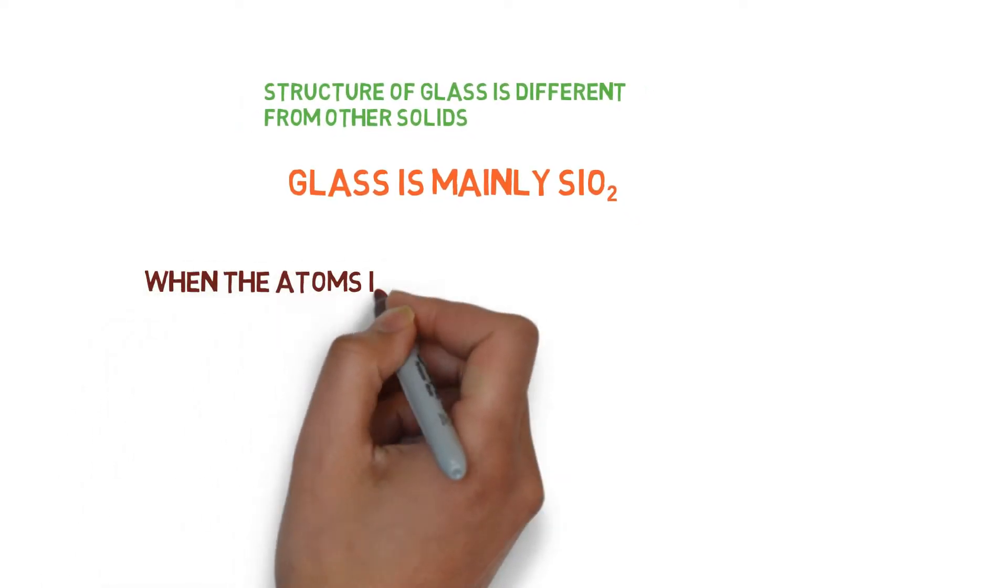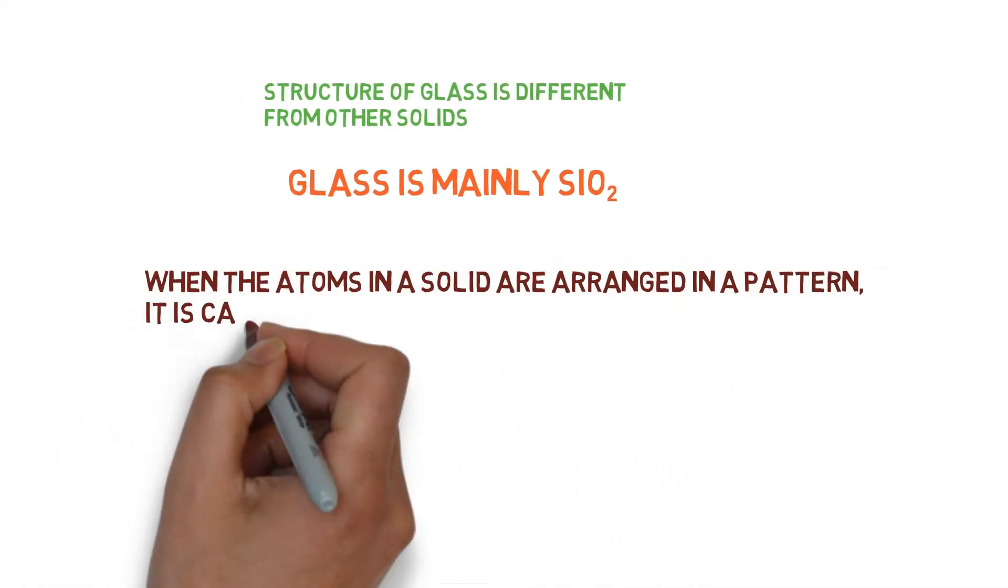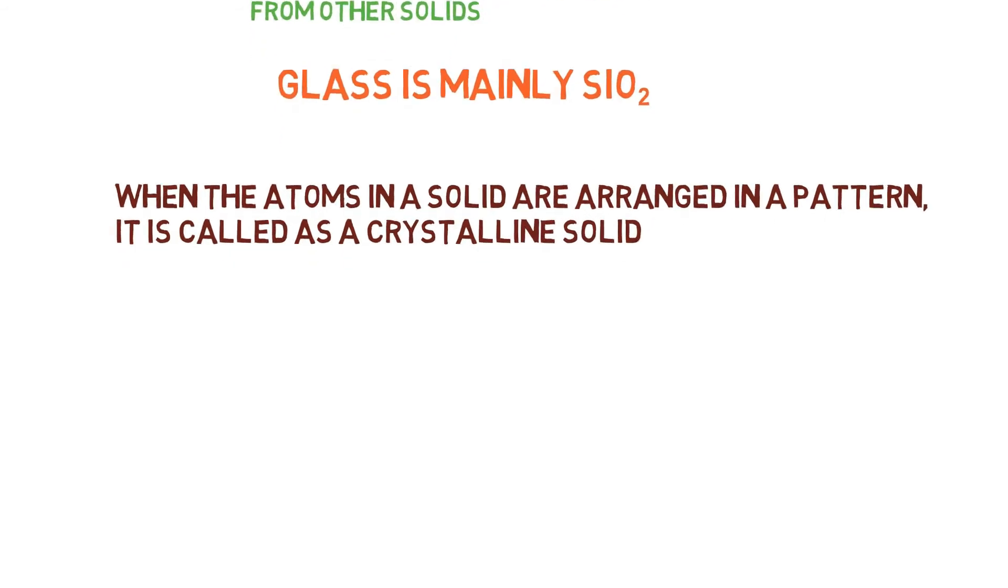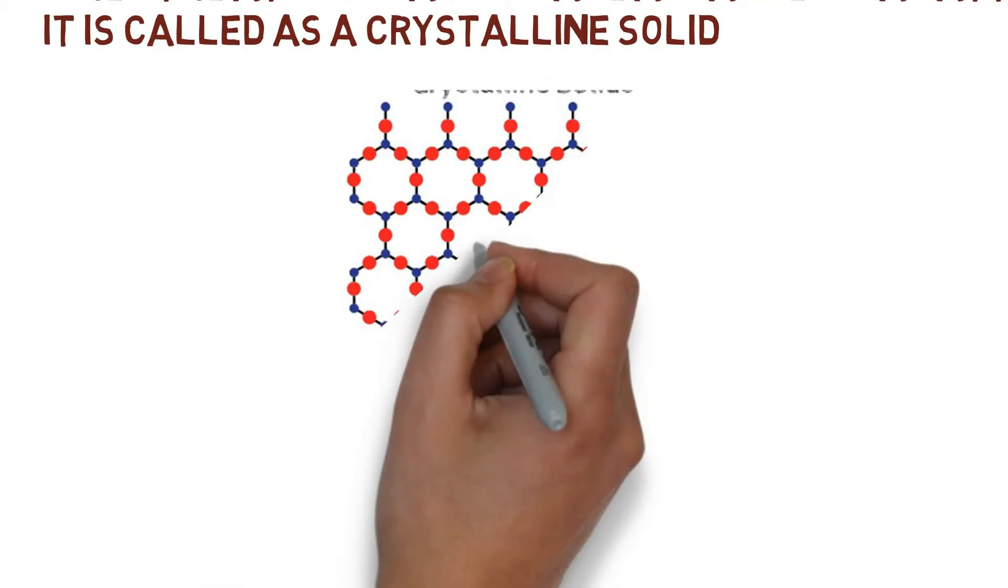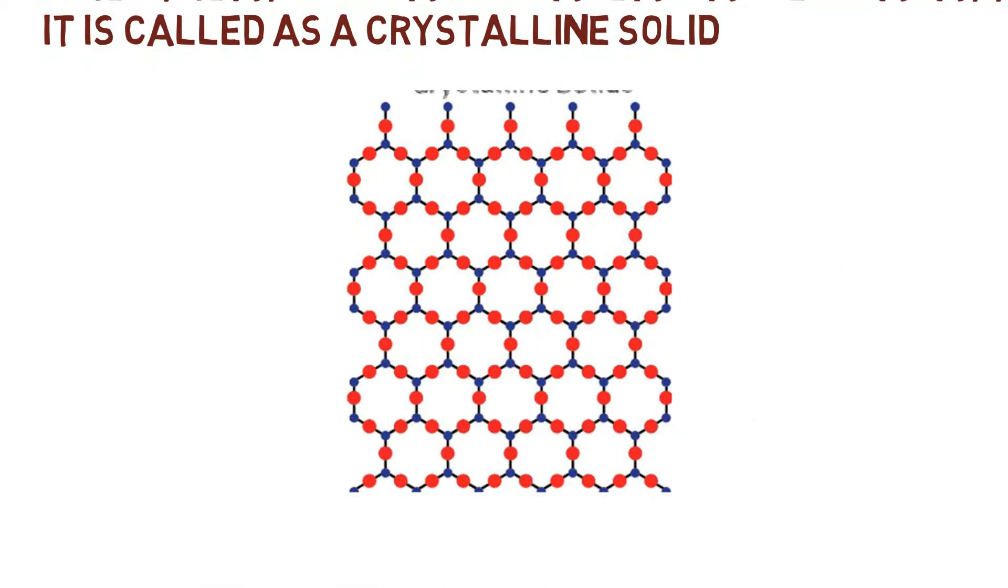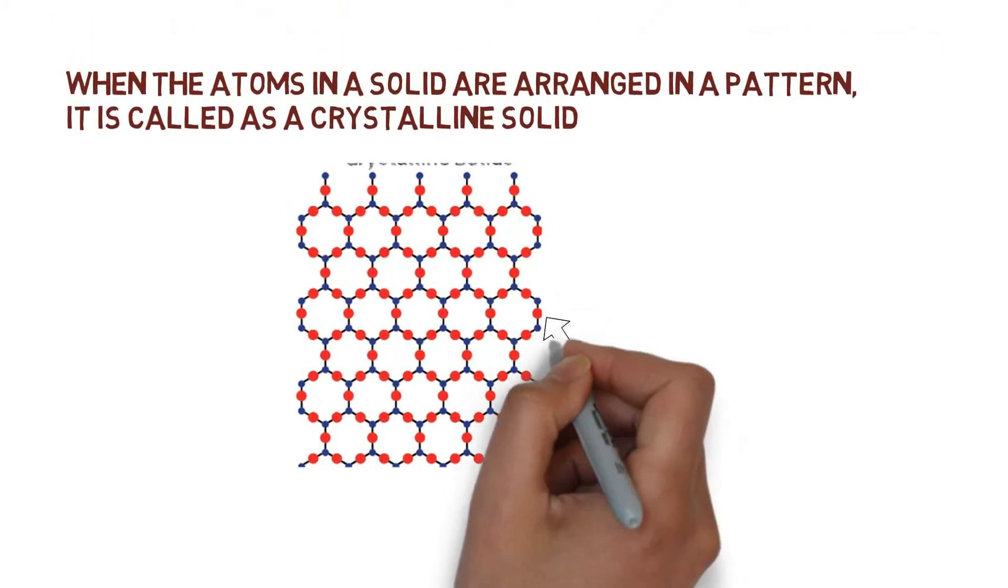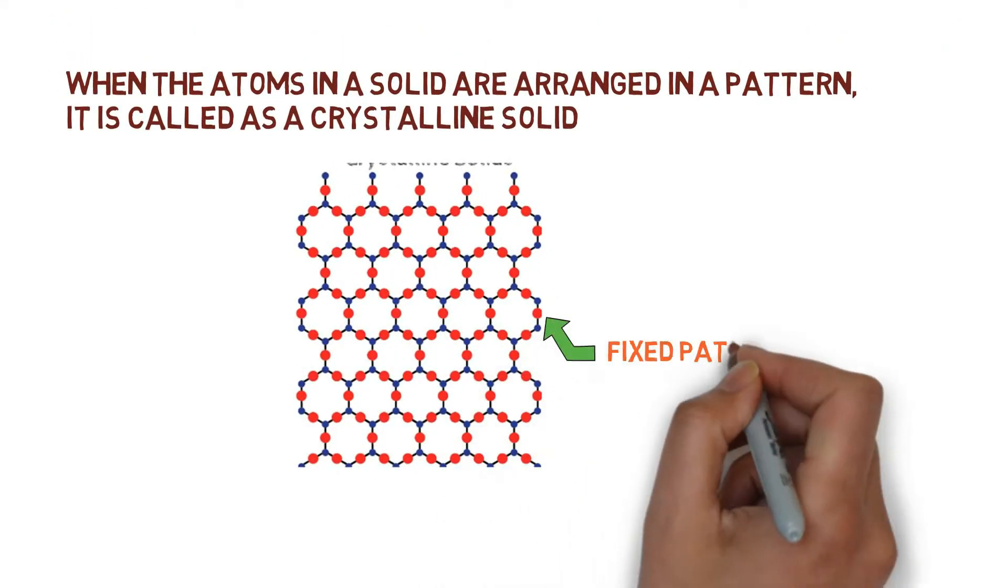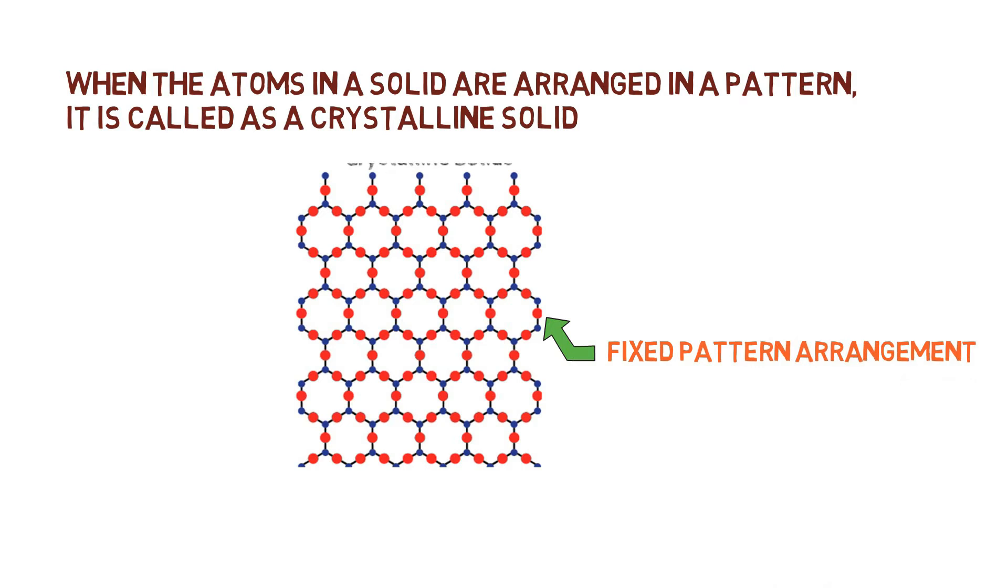When the atoms in a solid are arranged in a pattern, it is called a crystalline solid. We can see here that the solid arranges in a type of fixed pattern arrangement where the pattern repeats itself multiple times.